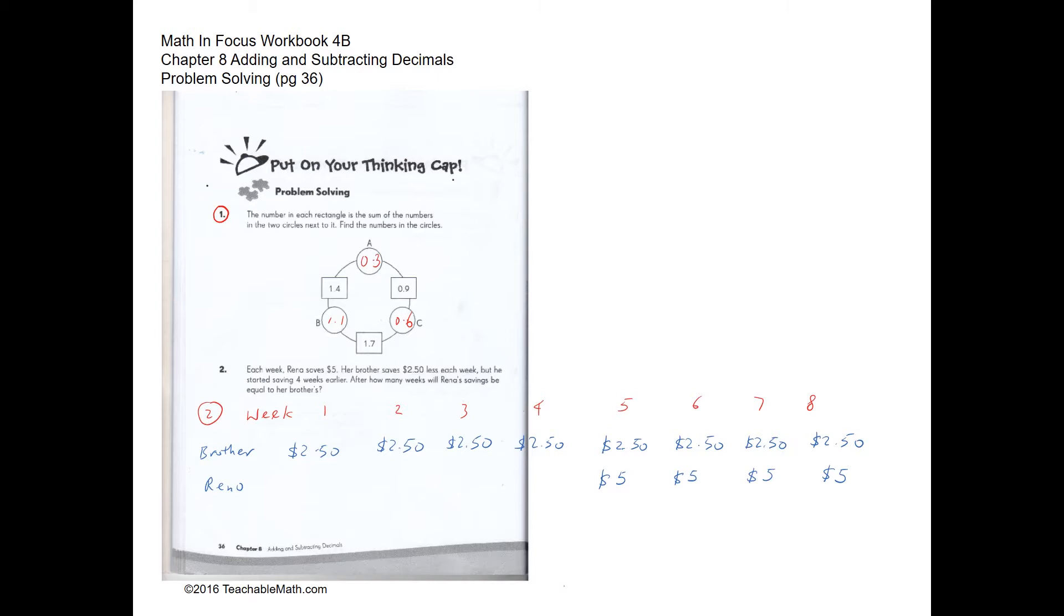Problem solving. Question one. The number in each rectangle is the sum of the numbers in a circle next to it. So 1.4 is the sum of 0.3 and 1.1 that makes 1.4. And 1.1 and 0.6 make 1.7. And 0.3 and 0.6 make 0.9.